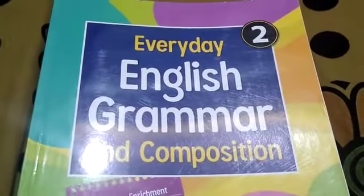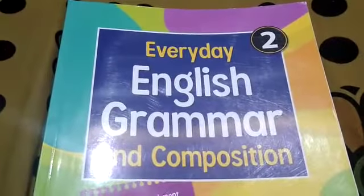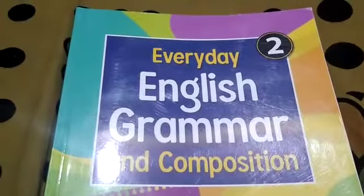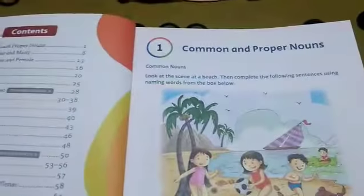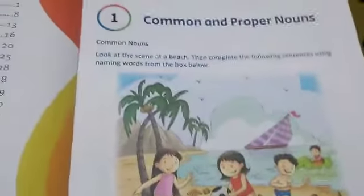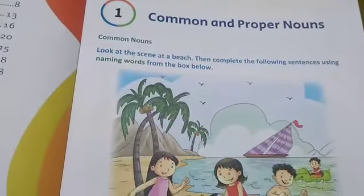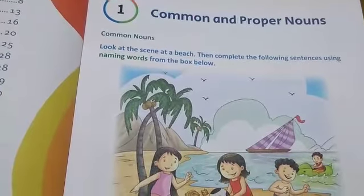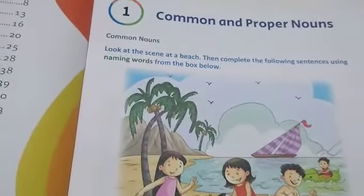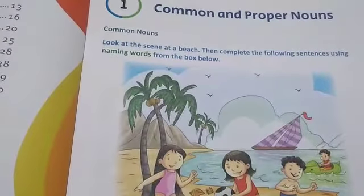Good morning everyone. This is your English grammar book class 2. This is Chandrika ma'am. In last class, in your grammar amusement book, we learnt what is a noun. Noun is a name of a person, place, animal, and things — that is naming words. Naming words are called nouns.